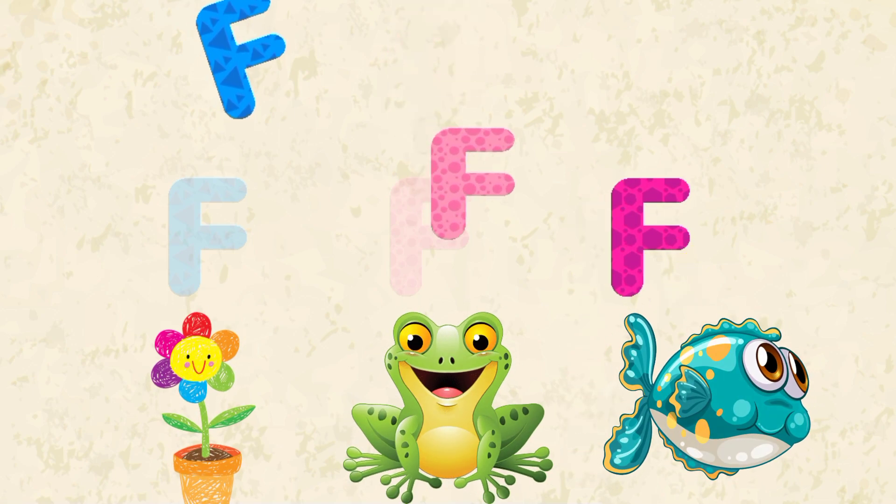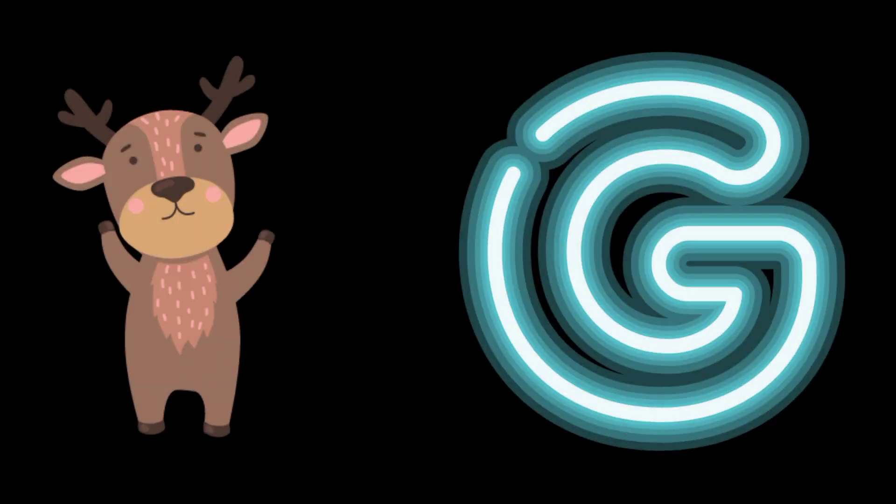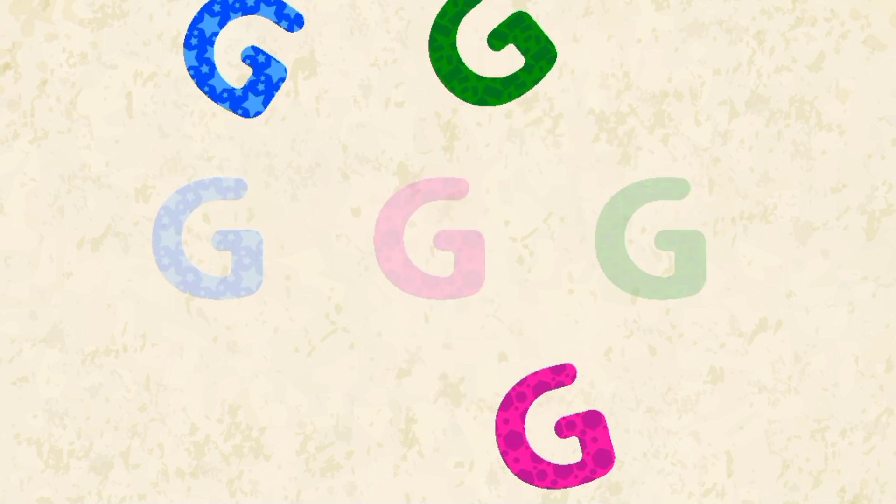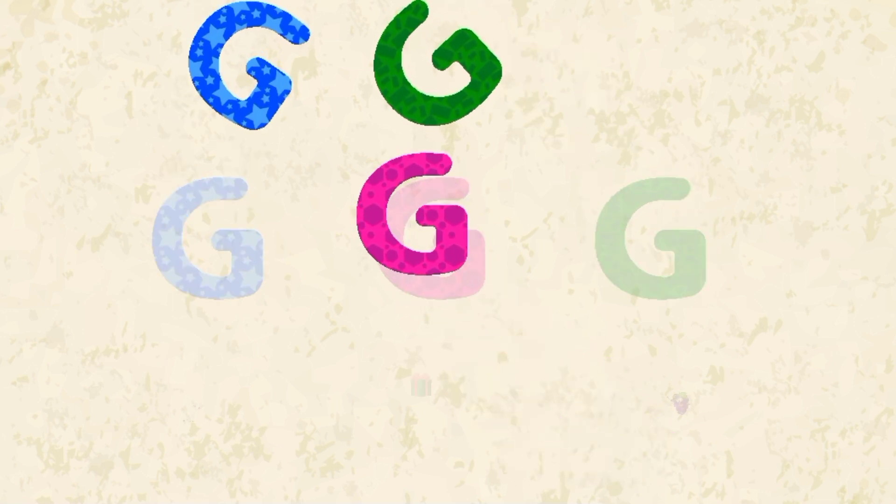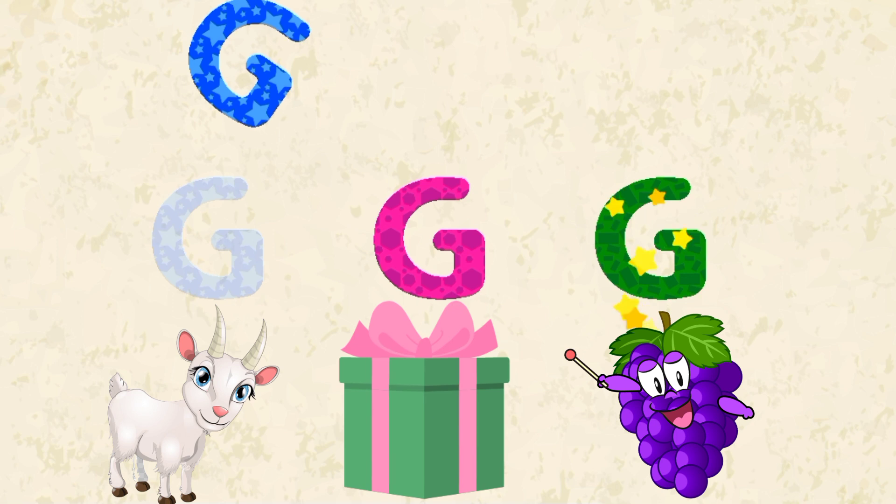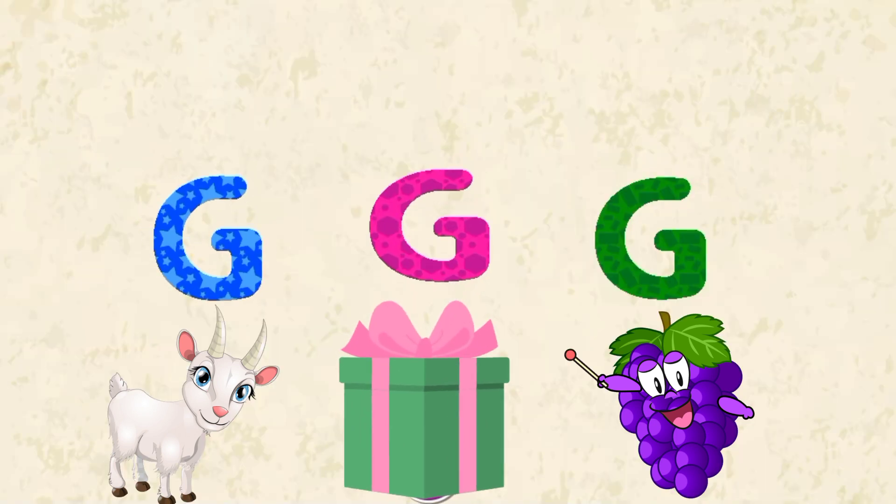Letter F. F for Flower, F for Frog, and F for Fish. G. G for Gold, G for Gift, and G for Grapes.